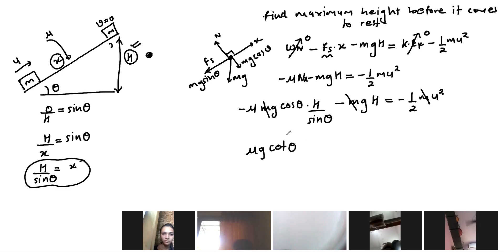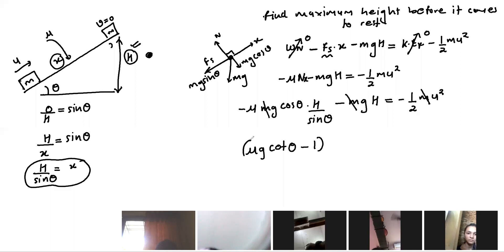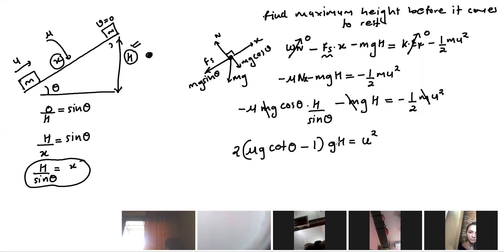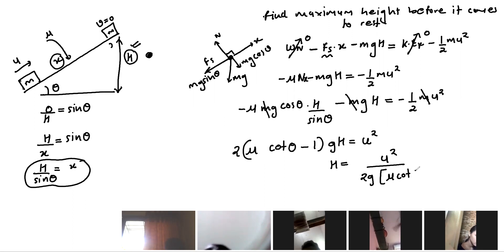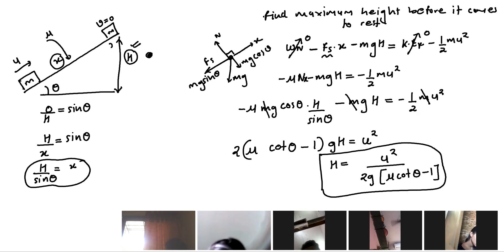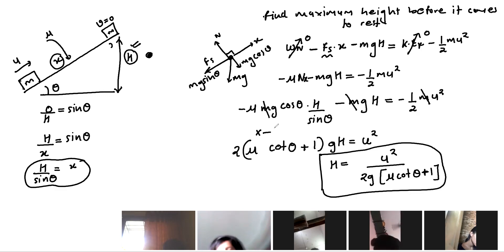Taking gh as common factor and rearranging: gh(1 – μcotθ) = ½u², so h = u²/[2g(1 – μcotθ)]. All signs are checked — the minus through the bracket flips appropriately, giving the final answer for maximum height on the inclined surface with friction.